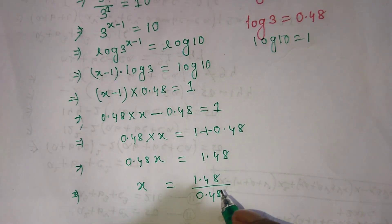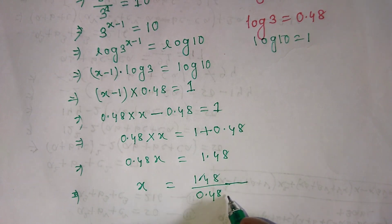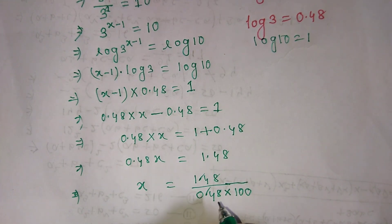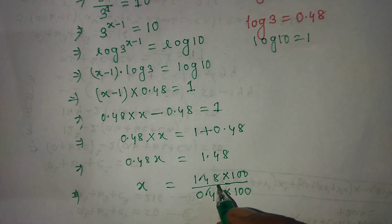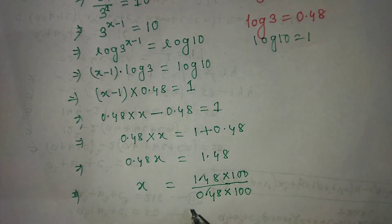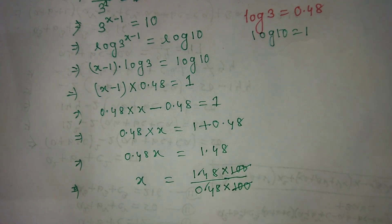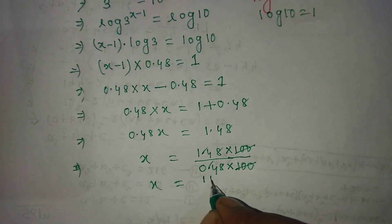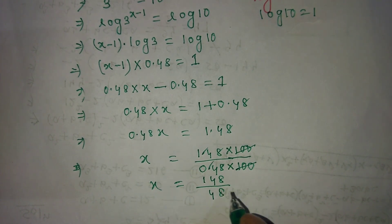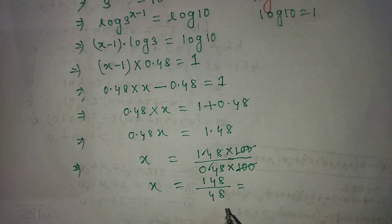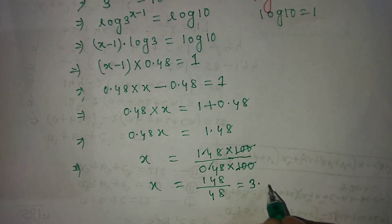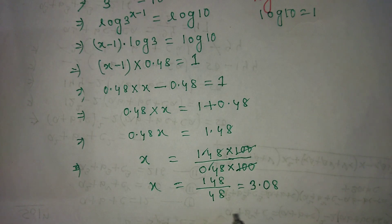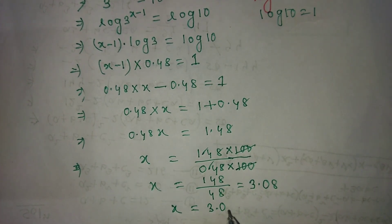We remove the decimal from numerator and denominator by multiplying both by 100, then cancelling, giving x equals 148 over 48. Dividing 148 by 48, the result is 3.08. So the value of x is 3.08.